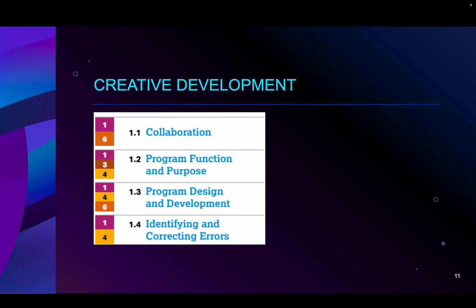Creative development, based on the College Board, is broken down into four mini sections: collaboration, program function and purpose, program design and development, and identifying and correcting errors.